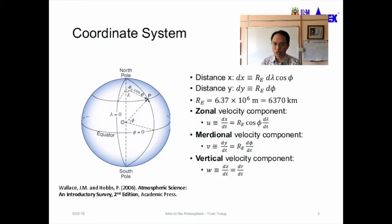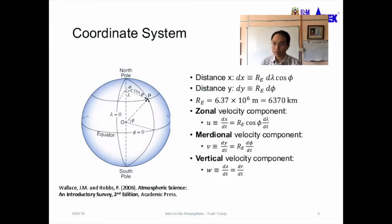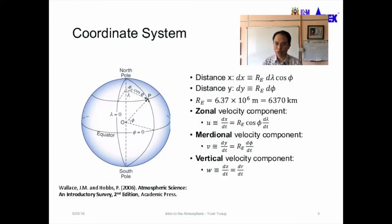The zonal velocity component u is approximately equal to dx over dt, where dx is RE times d-lambda times cos phi, divided by time — since velocity is distance over time. The meridional velocity component v is dy over dt, where dy equals RE times d-phi, again divided by time.